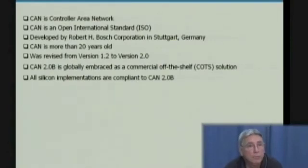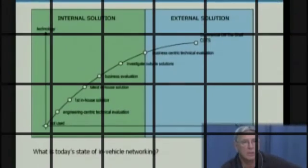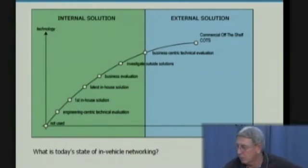CAN is pretty old — about 20 years old. It was patented and had a major revision from version 1.2 to version 2.0. We're going to find out in the next several presentations where we are today in the state of in-vehicle networking.